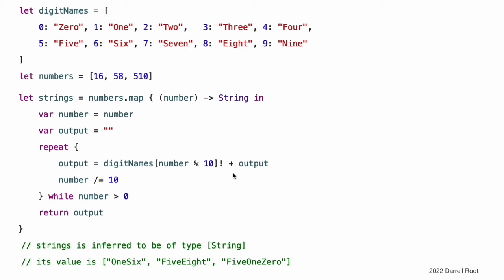The number variable is then divided by 10. Because it is an integer, it is rounded down during the division, so 16 becomes 1, 58 becomes 5, and 510 becomes 51. The process is repeated until number is equal to 0, at which point the output string is returned by the closure and is added to the output array by the map method. The use of trailing closure syntax in this example neatly encapsulates the closure's functionality immediately after the function that the closure supports, without needing to wrap the entire closure within the map method's outer parentheses.